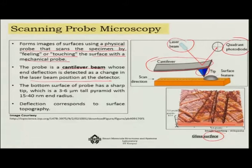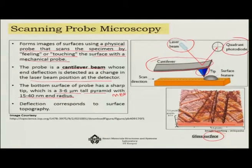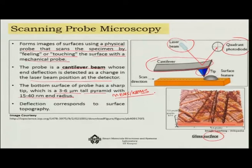The bottom surface of the probe has a sharp tip which is just 3 to 6 micrometers tall — a pyramid with 15 to 40 nanometer end radius. This is very challenging; that bottom part of the system is essentially a MEMS or nano electromechanical system. Naturally, the deflection corresponds to the surface topography, so our tip has to be very fine, and whatever little deflection is produced is interpreted in terms of surface roughness.